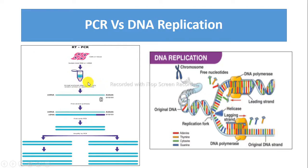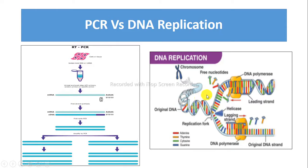PCR uses thermophilic DNA polymerase such as Taq DNA polymerase, whereas DNA replication uses DNA polymerase. Taq polymerase does not contain the 5' to 3' exonuclease activity, whereas DNA polymerase has 5' to 3' exonuclease activity to degrade RNA primers.